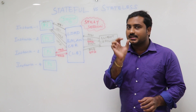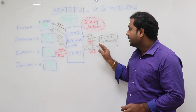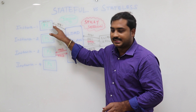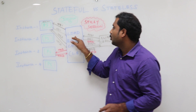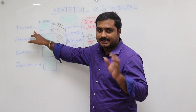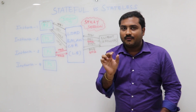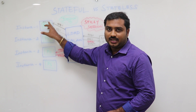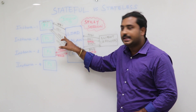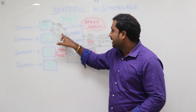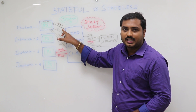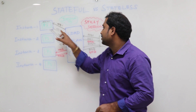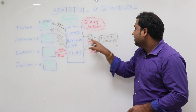The load balancer checks which instances are available and sends the request to any one of them. Request 1 is received from the client and the load balancer sends it to Instance 1. If you have developed any application using session, a session will be created in Instance 1, and it will return a JSessionID in the response. This response — Response 1 for Request 1 — contains the JSessionID, and is sent back to the browser.